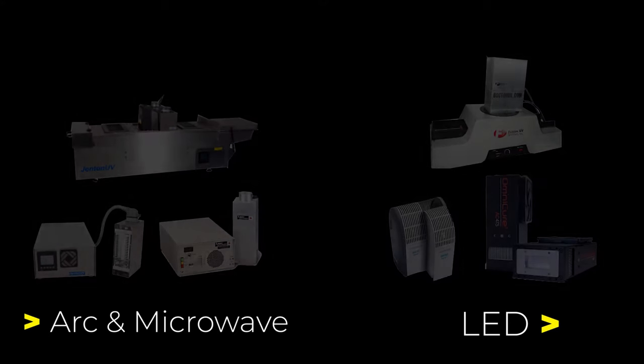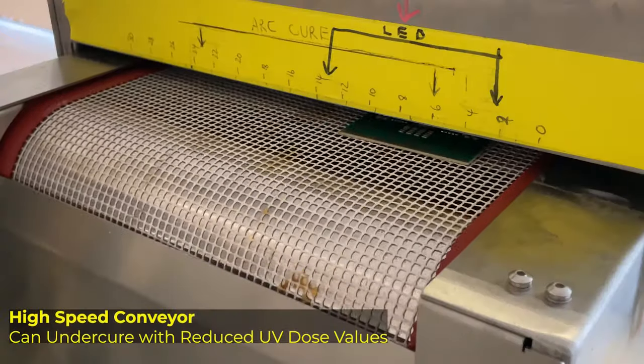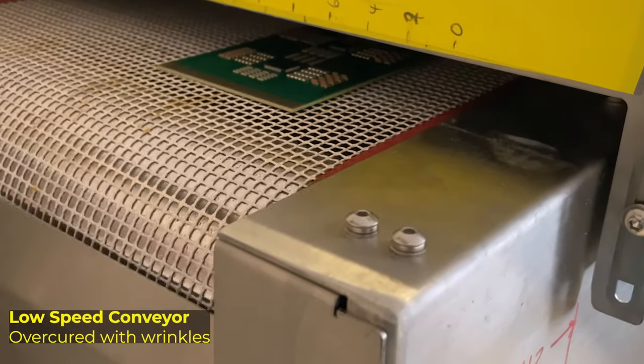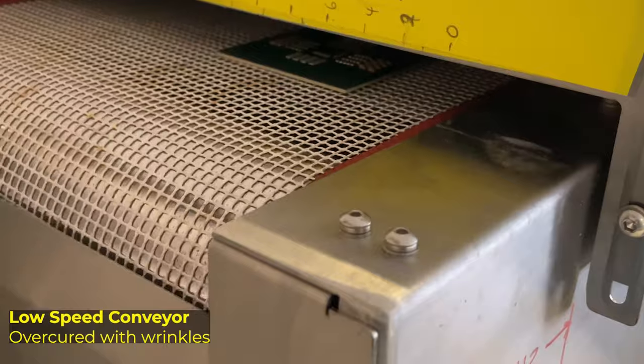One of the main parameters that affects curing of UV coatings is conveyor speed. Too fast and the UV dose is reduced, giving an under cured coating. Too slow and you can end up over cured with a wrinkled surface.